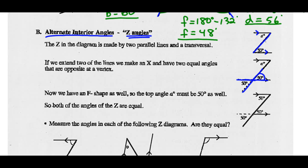We also have an F shape. Looking for the F shape, I know that 50 degrees also equals A because they're corresponding angles — they form that F shape, as we discussed in Part A. So now we know A is 50. Both angles of the Z are equal. Going back to the original, A and 50 are both equal — these are both 50-degree angles.